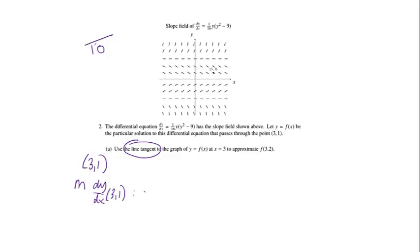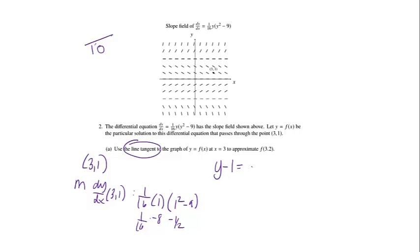So I do that. I'm going to get 1/16th times 1 times (1 squared minus 9). That's going to give me 1/16th times negative 8, which gives me negative 1/2. So that is my slope. All I need to do is just y minus y₁ equals m times (x minus x₁), which is 3.